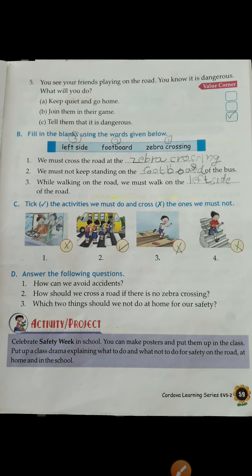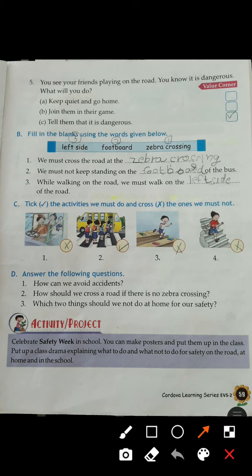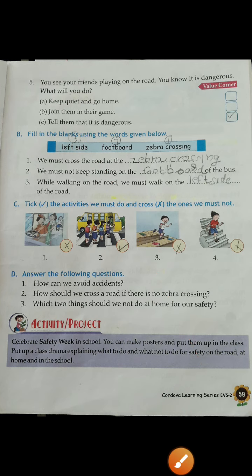Number five, you see your friends playing on the road and you know how dangerous it is. What will you do — keep quiet and go home, join them in their game, or tell them it is dangerous? The answer is C: tell them it is dangerous.